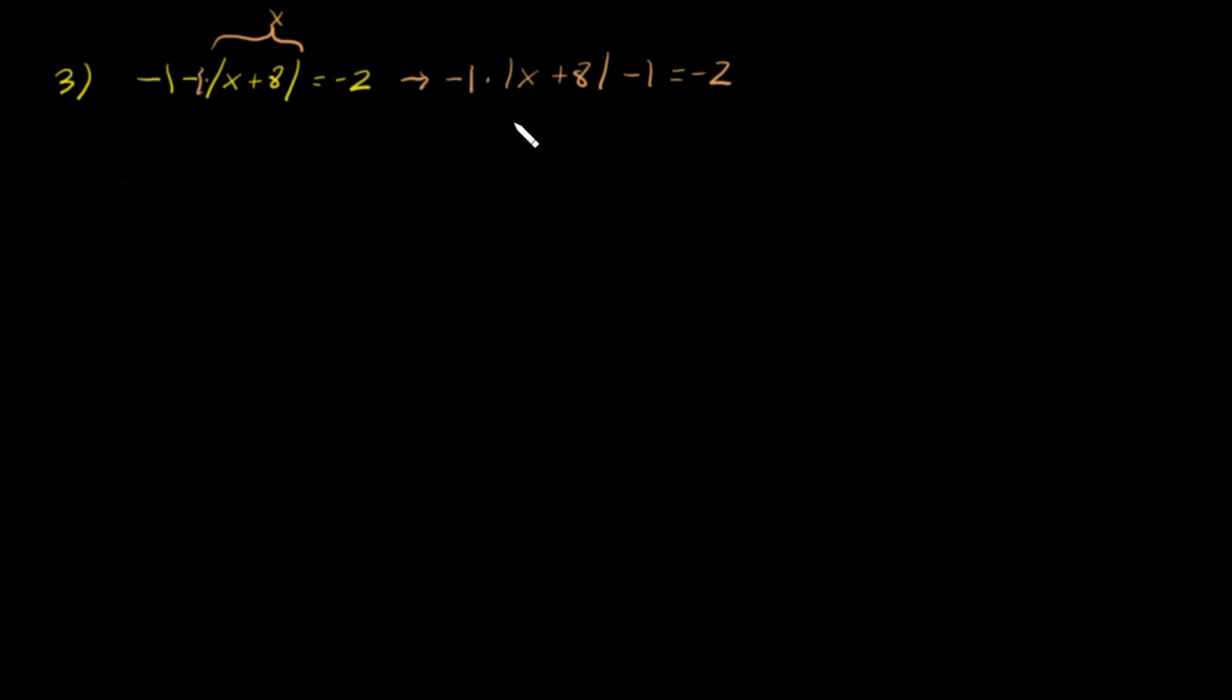That may help you out to better solve this. All you do is you have to do addition and subtraction first to get rid of numbers to isolate the absolute value here. So that tells us that we add one to both sides. So we get negative one times the absolute value of x plus 8 equals negative 1. Divide both sides by negative 1. So we get the absolute value of x plus 8 equals 1.